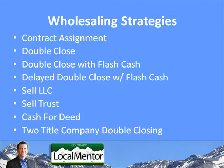The methods are: standard contract assignment, double closing, double closing with flash cash, delayed double closing with flash cash, selling an LLC, selling a trust, cash for a deed, and using two different title companies to do a double closing. That last one is actually more than seven, and I'll explain why I'm not super thrilled with that technique.